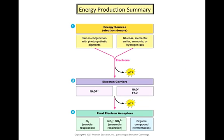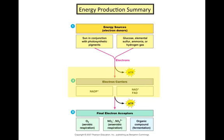Let's look at a summary of the energy production we have discussed in the last few lectures. In order for an organism to produce energy to sustain life, there must be some initial input of energy in the form of an electron or hydrogen donor. These energy sources can either be the sun in conjunction with chlorophyll, or another molecule that will donate electrons, such as glucose. The electrons that come from electron donors reduce electron carrier molecules such as NADP+, NAD+, and FAD.